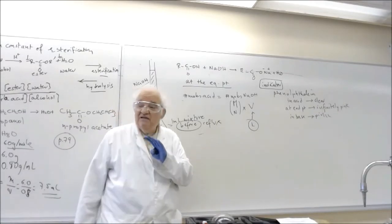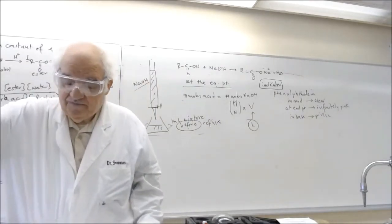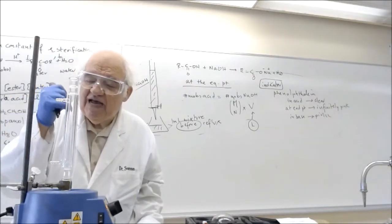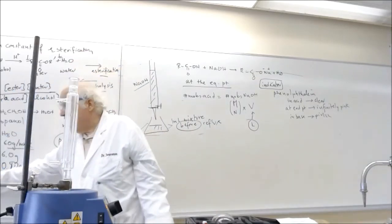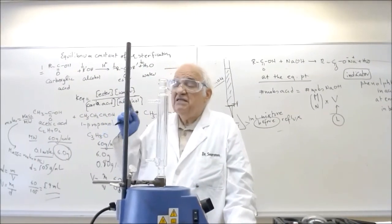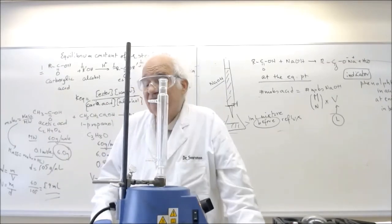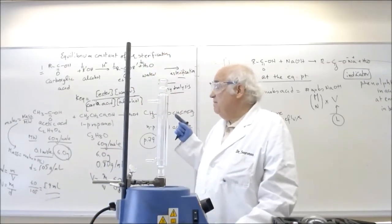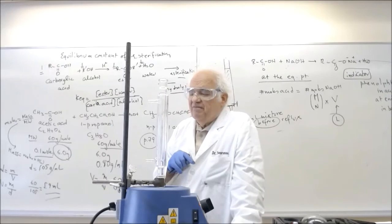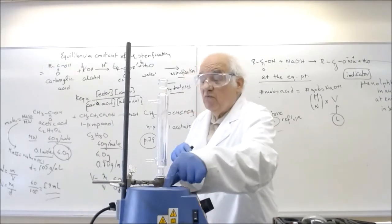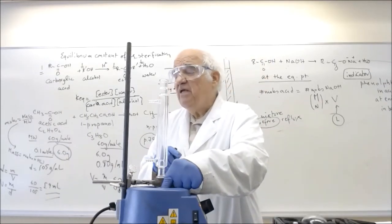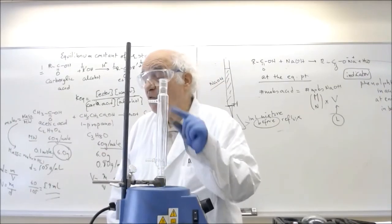When you finish refluxing, and again, reflux means what? You set up this apparatus. In here in the round-bottom flask, you have the acid, the alcohol, and the boiling chips, and you add eight drops of concentrated sulfuric acid, which is the catalyst. When you do this, then you perform a, so you add the sulfuric acid and you start refluxing. And then when you finish up, after one hour, half an hour, 45 minutes, whatever your instructor says, you cool that mixture.